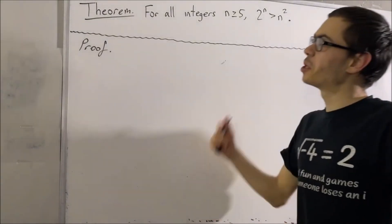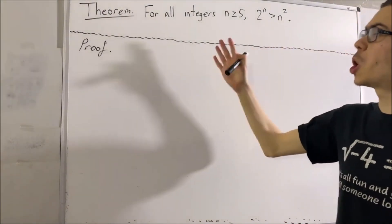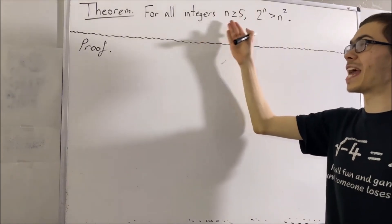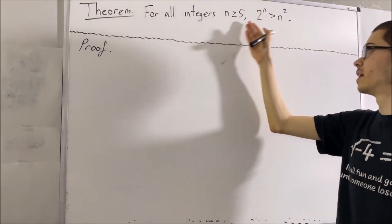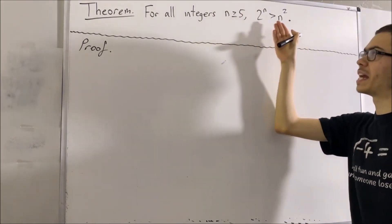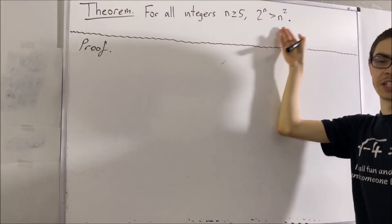In this video, we are going to prove that for all integers n greater than or equal to 5, 2 to the n is greater than n squared.